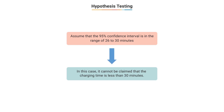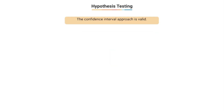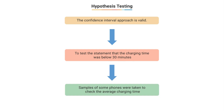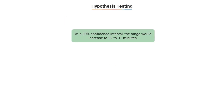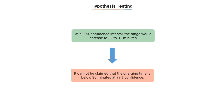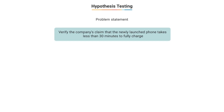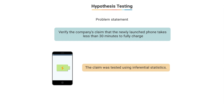However, if that same confidence interval comes out to say 26 to 32 minutes, then I cannot say for sure that the charging time is below 30 minutes. My conclusion would completely change if I were to consider a 90% or 99% confidence level. This approach is logically correct — to test the statement that charging was below 30 minutes, I took a sample and determined the average charging time would lie within a certain confidence interval. This is how inferential statistics concepts help you test claims correctly.